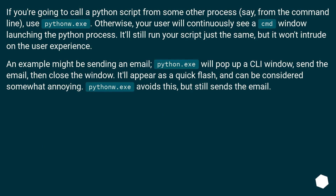If you're going to call a Python script from some other process — say, from the command line — use pythonw.exe. Otherwise, your user will continuously see a CMD window launching the Python process. It'll still run your script just the same, but it won't intrude on the user experience. An example might be sending an email: python.exe will pop up a CLI window, send the email, then close the window — it'll appear as a quick flash and can be considered somewhat annoying. Pythonw.exe avoids this, but still sends the email.